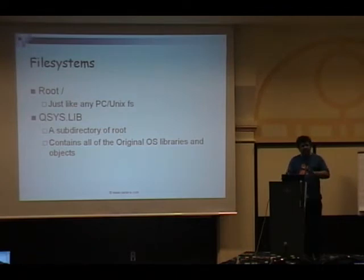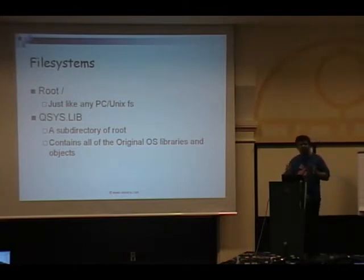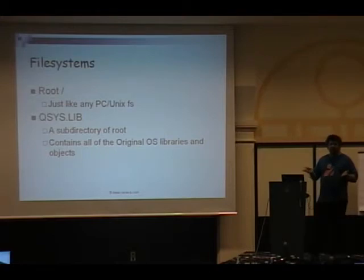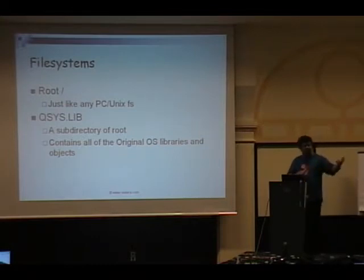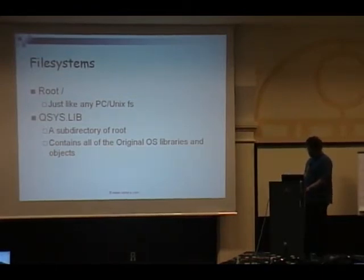You can also move things between those file systems. For example, a save file on the AS/400 — equivalent to a tar or archive file — can be taken from the original library, copied to the root file system, zipped, and sent via email to another location. You can then reverse the process and recreate those objects. No special protocols or tools are needed — just plain common file manipulation methods.